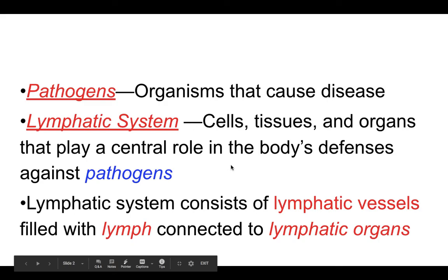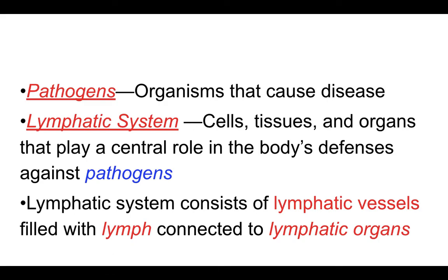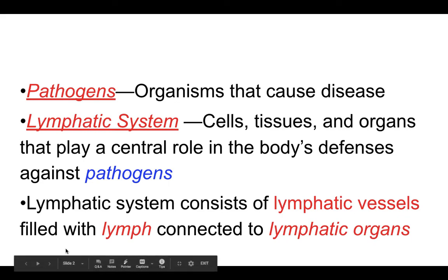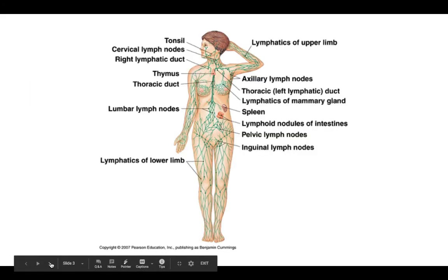The lymphatic system is a system that nobody really knows much about. Everybody thinks you have a quote-unquote immune system, but you really don't. Your body's immunity is part of this lymphatic system. It includes all the cells, all the tissues, all the organs that help keep you safe — all your body's defenses against any kind of a pathogen. Within the lymphatic system, there are lymphatic vessels, which are a lot like veins, filled with lymph, which is a watery fluid. And there are a bunch of different lymphatic organs that comprise this system as well.